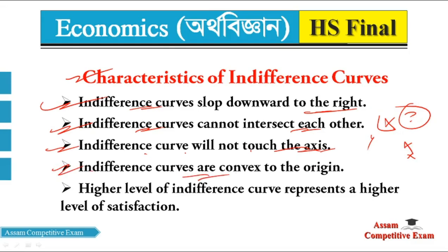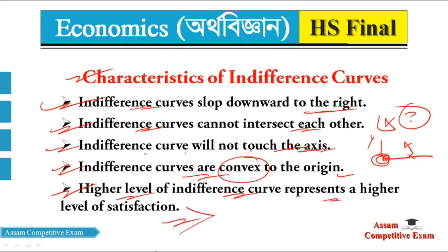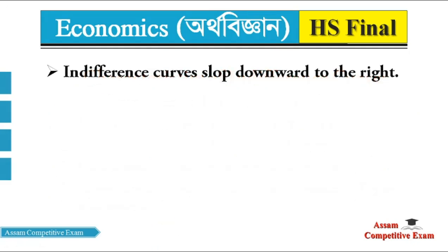Indifference curves are convex to the origin. Convex means bulging toward the origin — the origin is the starting point or base point on the graph. The last point: a higher level of indifference curve represents a higher level of satisfaction. The indifference curve slopes downward from left to right.